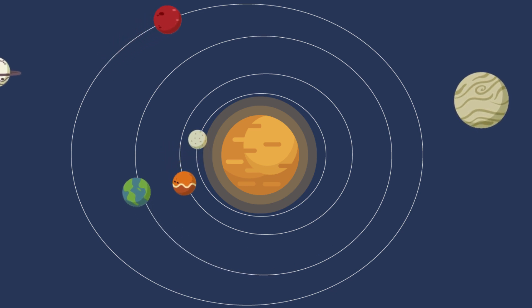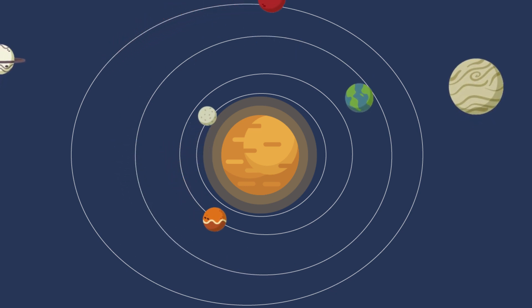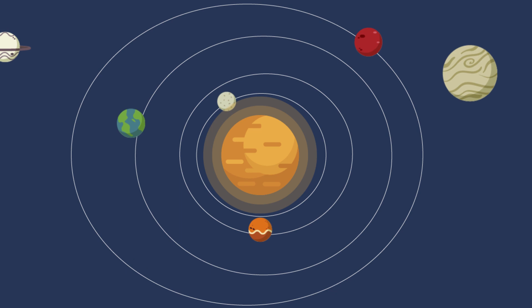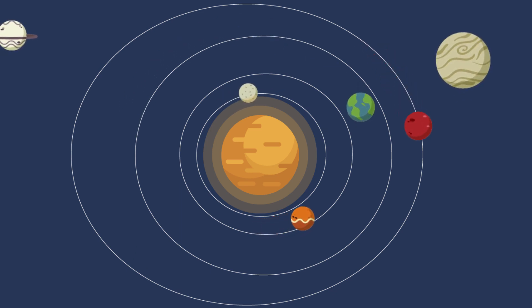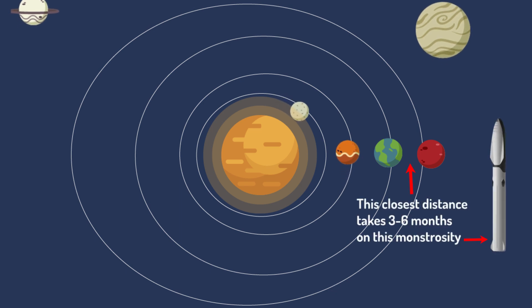Earth's orbit is smaller than Mars's. So Earth goes around the sun quicker so much so that every 26 months, Earth laps Mars and they are briefly next to each other. That's the one time when Earth-Mars transfers can happen. And this distance is going to take us to Mars in three to six months in BFR.